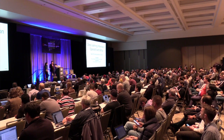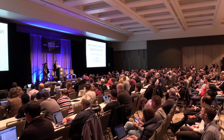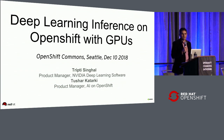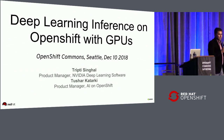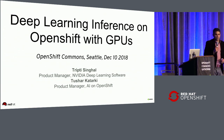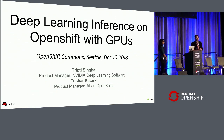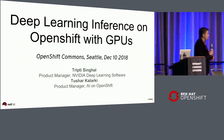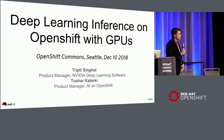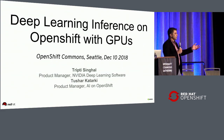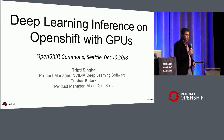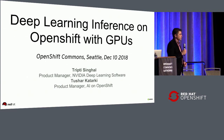Good afternoon. Hopefully it's coming loud and clear. So this is a very exciting topic for me, and hopefully you'll find that too. In terms of a show of hands, how many people are using AI on OpenShift and Kubernetes, or intend to use in the next few months? Okay, cool. That's a good set of people.